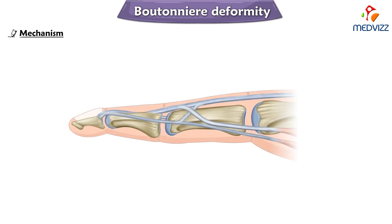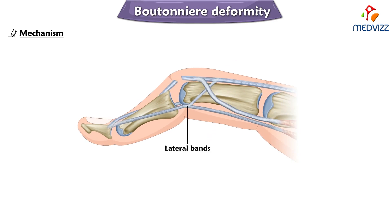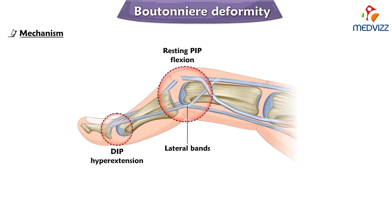The central tendon slip attaches to the dorsal aspect of the middle phalanx, and its main function is to maintain PIP extension and stabilize the extensor tendon apparatus. If the central tendon is disrupted or avulsed from the base of the middle phalanx, the lateral bands slip down to the volar position. The actions of the lateral bands and the flexor digitorum profundus are then unopposed, resulting in resting PIP flexion and DIP hyperextension — the mechanism behind boutonnière deformity.